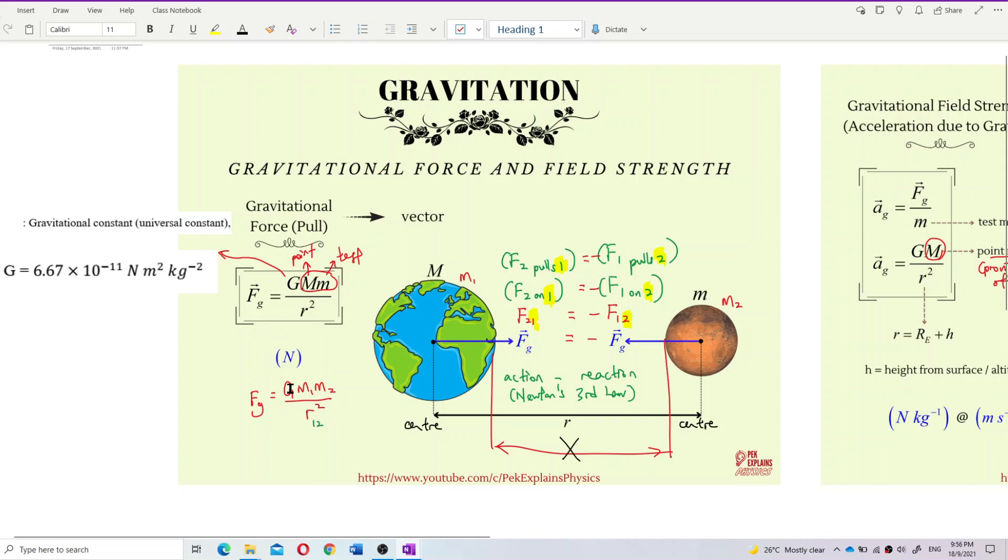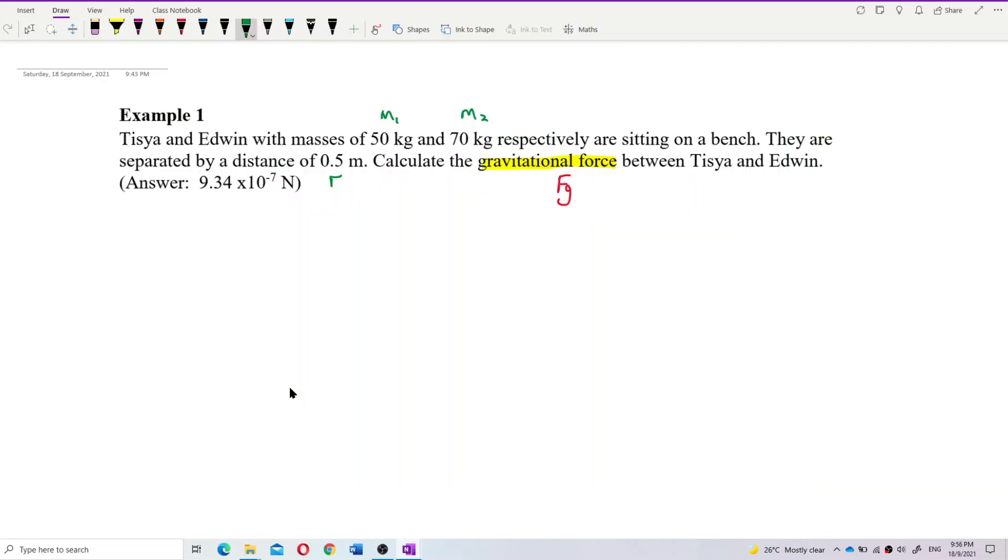Just use this formula, G M M over R square. So the formula is FG equal to G M1 M2 over distance between them square.